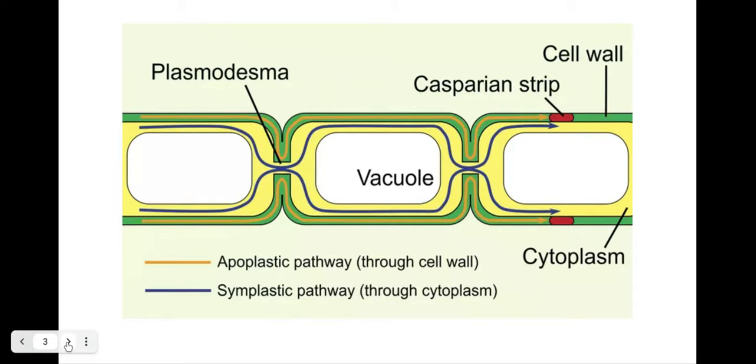What we'll then look at now is how it gets from the roots into the xylem bundle in the roots. So we have two routes that the water will take that we need to know about on this specification. One of them is the apoplastic pathway and one is the symplastic pathway.